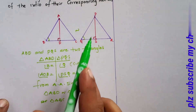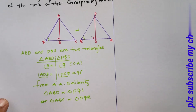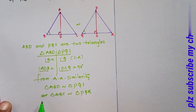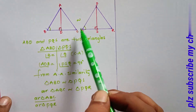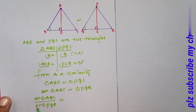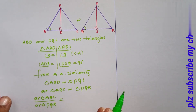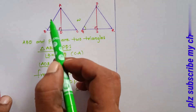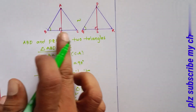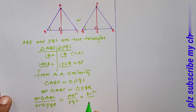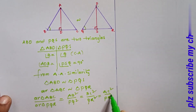Triangle ABC is similar to triangle PQR. Therefore, the ratio of areas equals the square of the ratio of corresponding sides: AB² / PQ² = BC² / QR² = AC² / PR². This is equation 1.